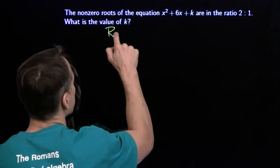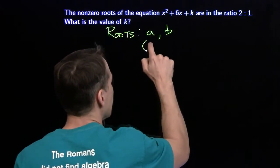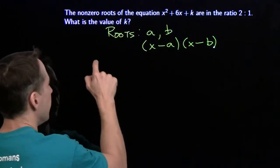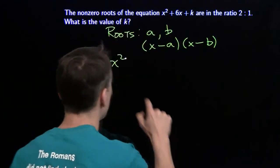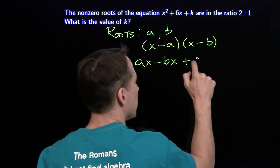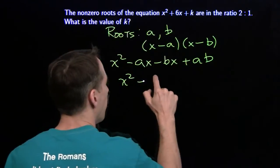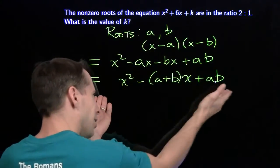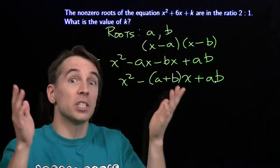We're going to say that the roots are a and b, so we can write this quadratic in factored form as x minus a times x minus b. Multiplying out: x squared minus ax minus bx plus ab. Grouping the x terms, we get x squared minus (a plus b) times x plus ab. So the coefficient of x is the opposite of the sum of the roots, and the constant term is the product of the roots.